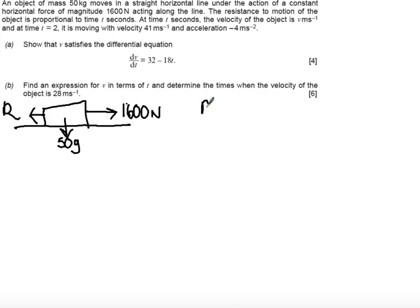It says that r is proportional to time. So the resistance is proportional to the time, and actually that leads us to the equation that the resistance can be written in some sort of form, r equals kt.